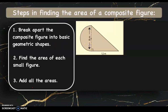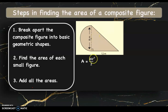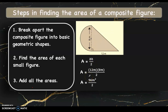We have a composite figure made up of a triangle and a semicircle. First, we break apart the composite figure into basic geometric shapes, then find the area of each. For the triangle, the formula is base times height divided by two. The base is 12 meters and the height is 8 meters, divided by two — the area of the triangle is 48 square meters.